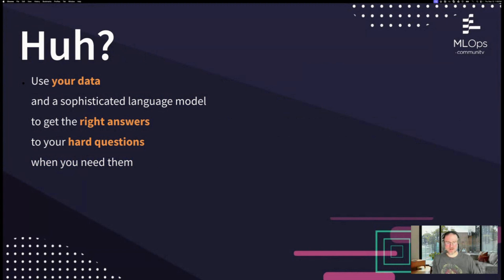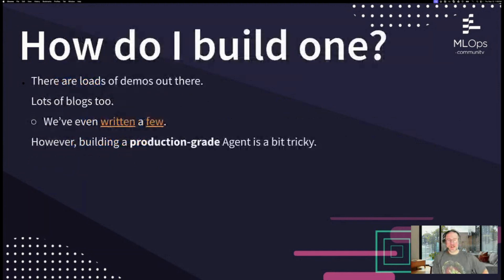The TL;DR is you can use your data, use a very fancy model somebody else has trained, get answers quickly, and ask very complex questions because of this multi-turn architecture that evaluates and adapts to staged responses based on actual data. But there's a massive leap between building something that is a really fun demo — which might take an afternoon — and moving toward a production-grade agentic system you can deploy and expose to your entire business or customers.